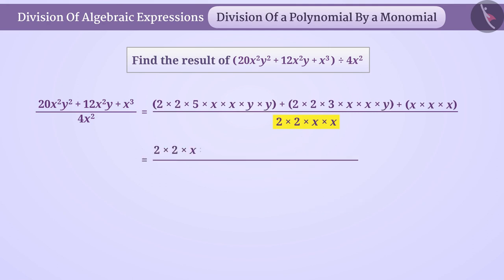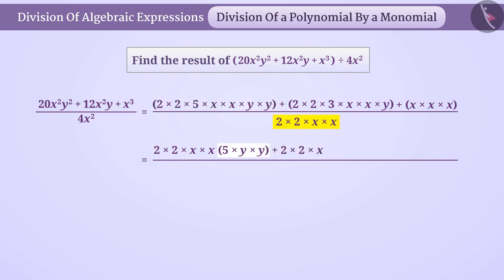This will leave 5 multiplied by y multiplied by y in the first term and 3y in the second term. Can you tell me how we can take 2 × 2 × x × x common from the third term? Think about it!